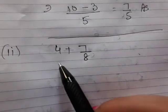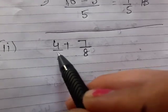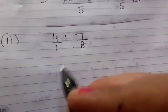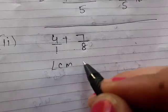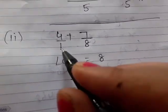Now your next part: 4 plus 7/8. Here also no denominator is given, that means it's 1. So 1 or 8, the LCM will be 8. You're taking 8 as LCM, so 8 divided by 1 equals 8.